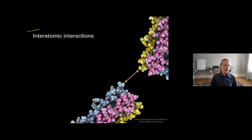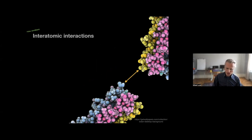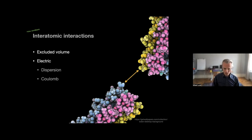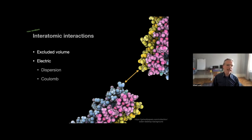If we consider non-covalent inter-atomic interactions and go back to basics — how can two atoms interact with each other — it turns out there are not so many ways. All atoms have an excluded volume, and there can be some electric interactions on top of that. By electric interactions I mean two things: dispersion interactions and Coulombic interactions, for example if we have an ion. That's about it — we have very few interactions to actually take into account, and all of this builds up into more intricate interactions.